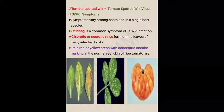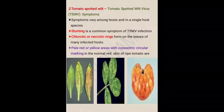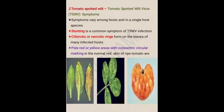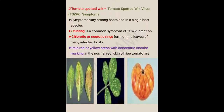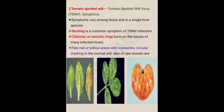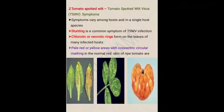The second disease of tomato is tomato spotted wilt, caused by Tomato Spotted Wilt Virus. Symptoms vary among hosts and even within a single host species. Stunting is a common symptom of Tomato Spotted Wilt Virus infection. Chlorotic or necrotic rings form on the leaf of many infected hosts. Chlorotic means loss of chlorophyll from that part.